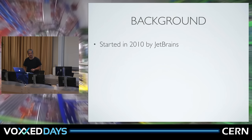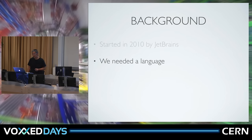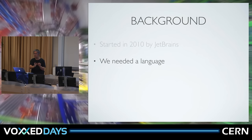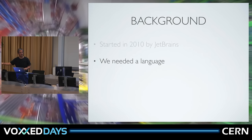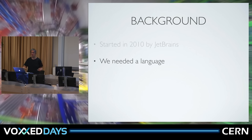So this was started in 2010 by us at JetBrains — I work for JetBrains. How many of you have heard of JetBrains? We make IntelliJ IDEA and 21 other products that nobody ever seems to know about. We needed a language because half of our products are on the IntelliJ platform, the server-side products are Java, and the .NET side is C#, VB.NET, and a tiny bit of F#. Everything else is written in Java, and we were getting tired of Java — it was very verbose and we wanted something modern with functional constructs.